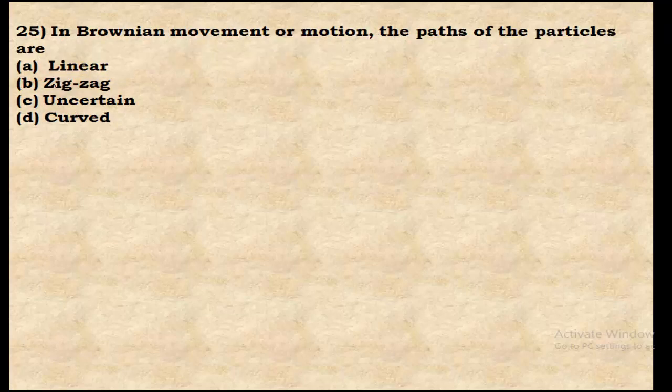Question 25: In Brownian movement, the paths of the particles are random or zigzag. That zigzag movement of particles is called Brownian movement. Option B is correct.